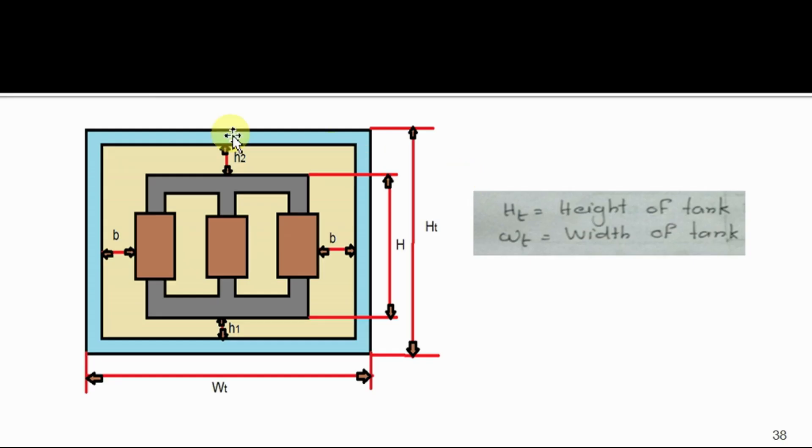Figure of transformer inside a tank is given below. Wt is the width of tank and Ht is the height of tank. From figure, height of tank is height of core plus h1 plus h2.